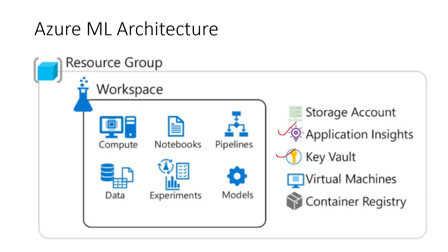Virtual machines are used to create experiments on a particular problem statement. A virtual machine has a certain capacity — for example, a certain amount of RAM and CPU cores. Once combined, it creates a virtual machine with an add-on specifying which OS to use, whether a Windows or Linux virtual machine.